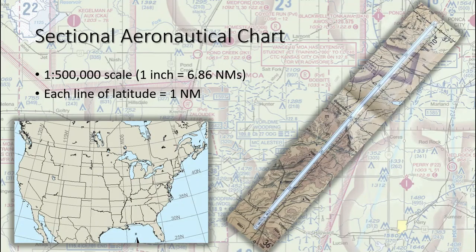An aeronautical chart, or sectional for short, is the roadmap for a pilot flying under VFR. The chart provides information that allows pilots to track their position and provides available information that enhances safety. Sectional charts are the most common VFR charts used by pilots today. They contain landmarks, obstacles, terrain information, airspace, airfield and nav aid information, and lines of latitude, longitude, and magnetic variation.